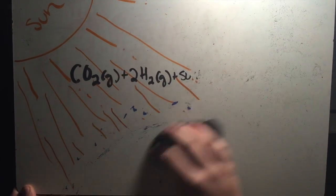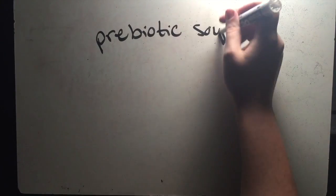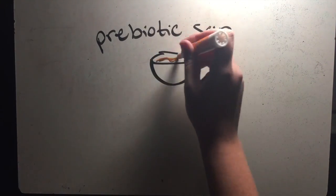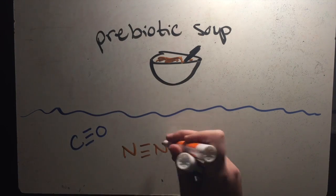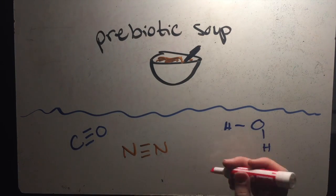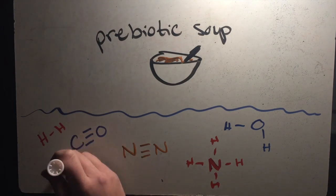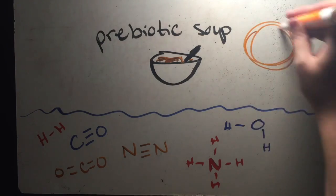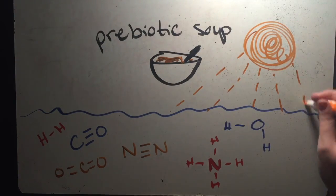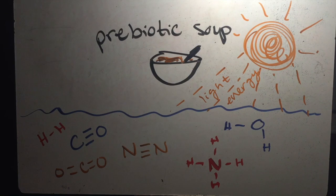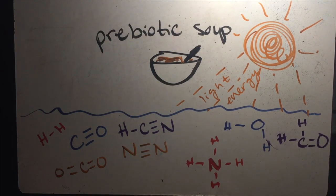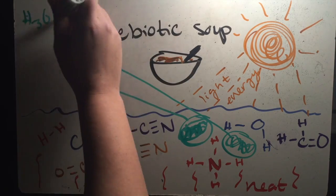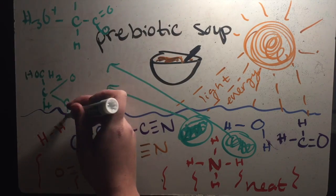This information and energy source inspired one of the two main models of chemical evolution today, called the prebiotic soup model. This theory begins with the ocean. Primitive Earth's oceans were composed of many chemicals like carbon monoxide, nitrogen, water, ammonium, hydrogen, and carbon dioxide. The energy from the Sun powered reactions between these chemicals and formed more and more complex compounds like hydrogen cyanide and formaldehyde. Then heat powered more reactions, forming even more complex compounds like glycine and ribose, both of which are extremely important to life on Earth.